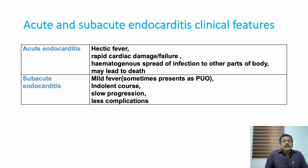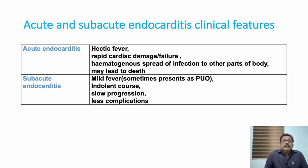There are two important terminologies: acute endocarditis and subacute endocarditis. Acute means rapid onset — patient can have cardiac damage, cardiac failure, high-degree fever with chills, and spread of infection to other parts of the body with high mortality if not treated properly. Subacute endocarditis presents with mild fever, indolent slow progression, and fewer complications.